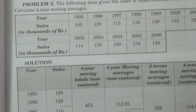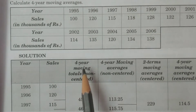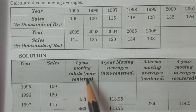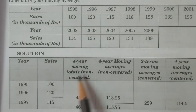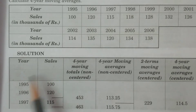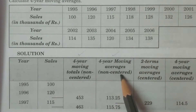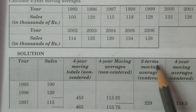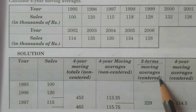Now I explain one more example — this one is for even period. The data gives year and sales, and you have to calculate four-year moving averages. You need to calculate four-year moving totals, four-year non-centered moving averages, and then take the average of two consecutive non-centered moving averages to get the centered moving averages. Add two consecutive non-centered averages (a + b) divided by two, and these are the centered moving averages.